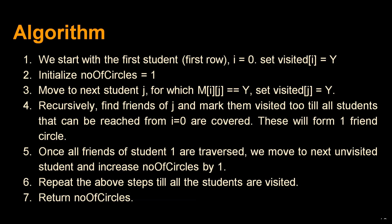Move to the next student j where M[i][j]=Y and set visited[j]=Y. Recursively find friends of j and mark them visited until all students reachable from i=0 are covered. These form one friend circle.